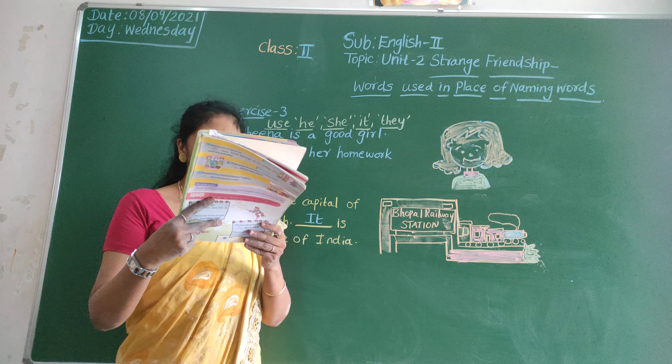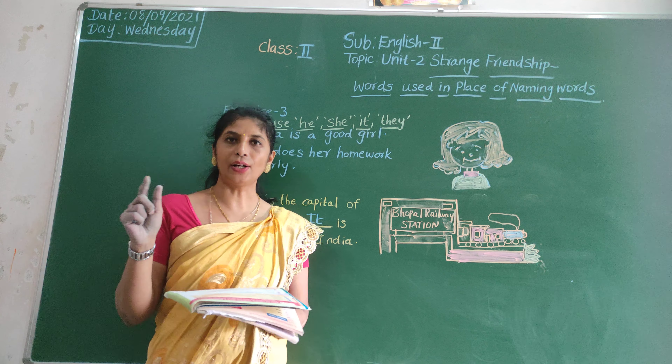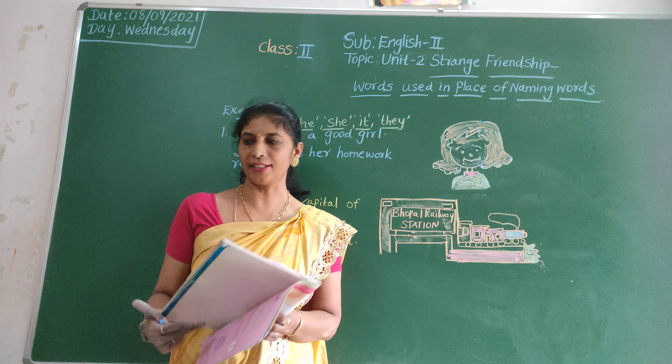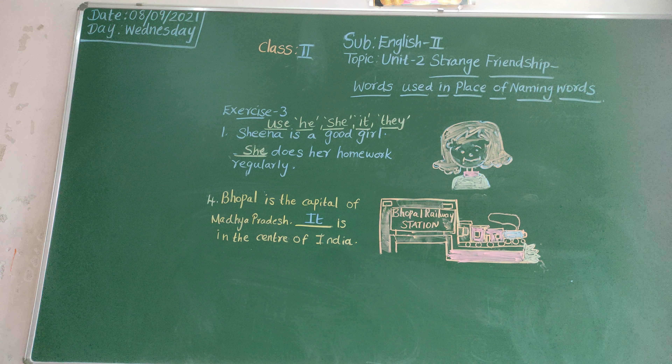You can understand, children. Once again I repeat. First one: Sheena is a good girl. She does her homework regularly. Second one: Sumit is also a good boy. He says good morning to his parents and teachers. Sheena and Sumit are very good friends. They always help others. Bhopal is the capital of Madhya Pradesh. It is in the centre of India. Okay children, we will see in the next class. Thank you.